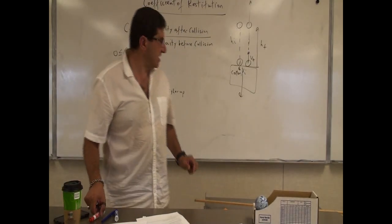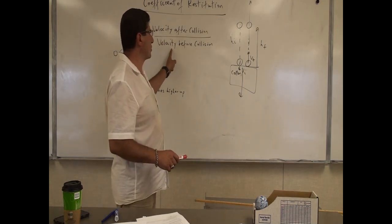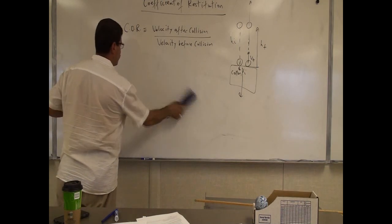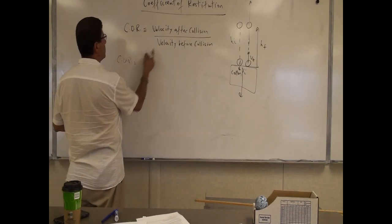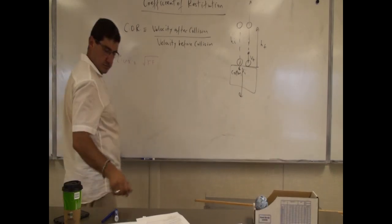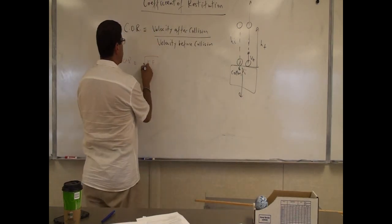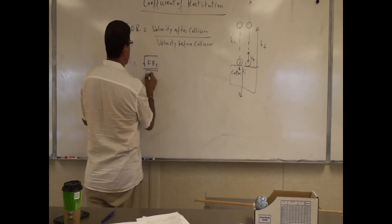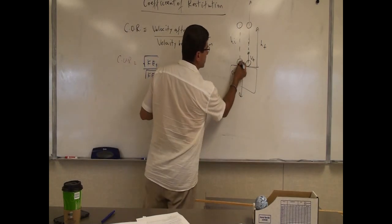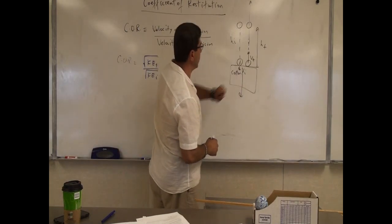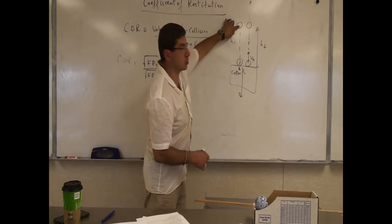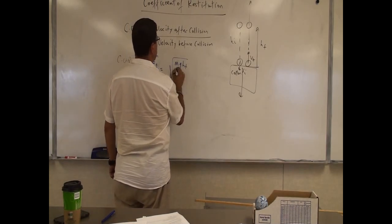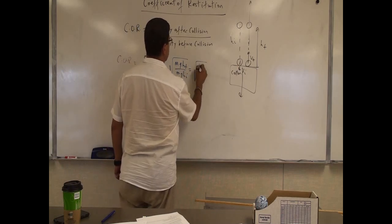So how do we test this? Instead of using velocity after collision divided by velocity before, we can base it on heights — it's easier. The velocity is proportional to the square root of kinetic energy, and kinetic energy is proportional to potential energy MGH, so the coefficient of restitution equals the square root of H final over H initial.